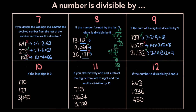To check if a number is divisible by 10, you just check if the last digit is 0. The last digit in 120 is 0, so it's divisible by 10. The last digit in 127 is 7, so it's not divisible by 10. And the last digit in 3040 is 0, so it is divisible by 10. So that one's really simple.